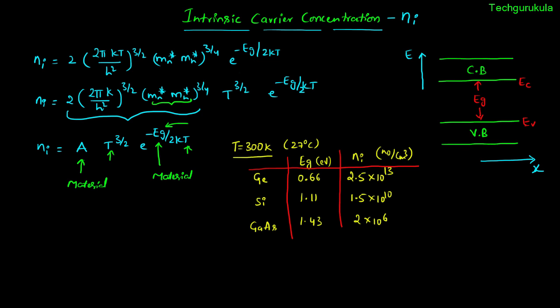As the energy band gap increases, the intrinsic carrier concentration Ni decreases rapidly at the same temperature. Leakage current in a diode depends on Ni — a higher Ni means higher leakage current and higher leakage power. So a smaller Ni is better in terms of leakage power. We will analyze this in more detail when discussing the PN junction diode. Most problems in this course will be based on silicon.